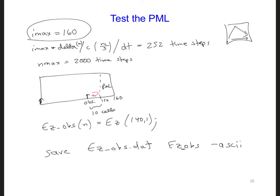Go ahead and run your code for this smaller grid. Imax is 160, Nmax is 2000. And we'll look at our results before we move to running the larger grid.